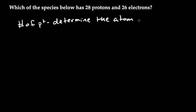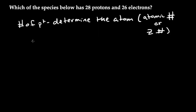This is also sometimes called the atomic number. You might also see something called a Z number, and that means the same thing — the Z number and the atomic number are the same thing. The other part you need to know is the number of electrons, and that's going to determine the charge.